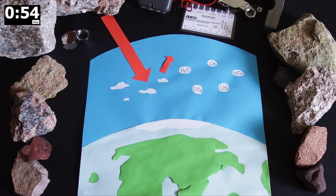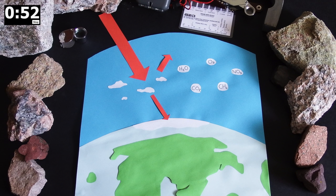Much of this is reflected back by the atmosphere, but some is absorbed by the Earth's surface. The absorbed radiation is then emitted as thermal radiation.